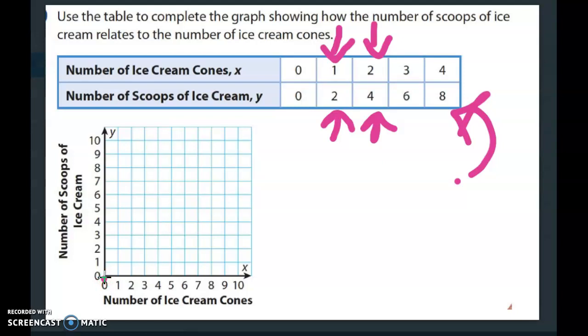Now they want us to plot 1, 2. So I'm going to go over 1 because look, this is my x-axis and this is my y-axis. I'm going to go over 1 and I'm going to go up 2, and I'm going to go over 2 up to 4, over 3 up to 6, over to 4 and then up to 8.